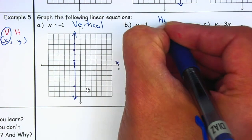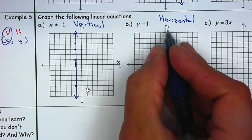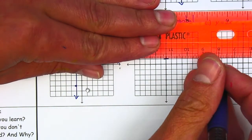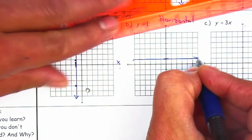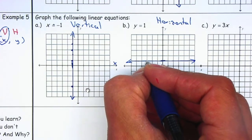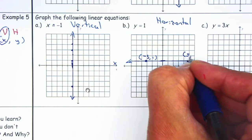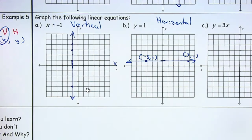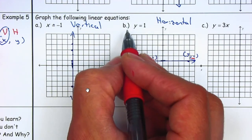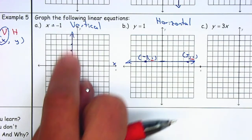Y is equal to a number is going to be horizontal. All the y-values have to be 1, so I go to the y-axis at 1 and then expand it. Any point on that line — this will be (negative 3, 1), this will be (5, 1), and so on. All the y-values are 1. So y is equal to a number is a horizontal line, and x is equal to a number is a vertical line.